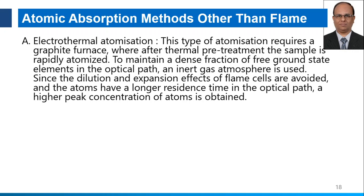Atomic absorption methods other than flame — flameless techniques — can overcome certain disadvantages of flame techniques. The first is electrothermal atomization, which requires a graphite furnace. After thermal pretreatment, the sample is rapidly atomized; an inert gas atmosphere is used to maintain a desired fraction of free ground state elements in the optical path. Since dilution effects of flame are avoided and the atom has a longer residence time in the optical path, a higher peak concentration of the atom is obtained — giving more intense peaks with the electrothermal atomization technique.